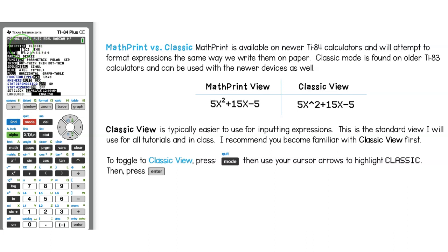Then notice where it says MathPrint and Classic. I'll use my cursor to go up to MathPrint and then go over to classic. To select classic, hit enter and this highlights it black.